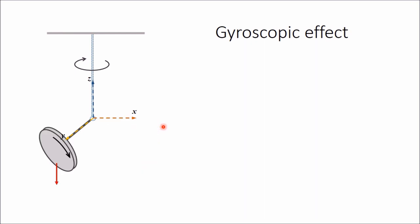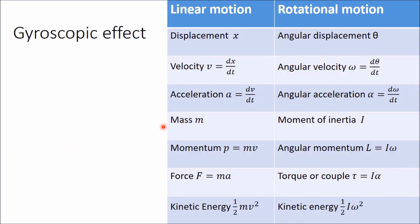To understand this phenomenon we need to know analogies between linear motion and rotational motion. In linear motion, linear displacement is represented by x; in rotational motion angular displacement is represented by θ. Linear velocity v is dx/dt, so angular velocity ω is dθ/dt. Similarly, acceleration is differentiated from velocity; angular acceleration is differentiated from ω. Mass moment of inertia I is analogous to mass m. In linear momentum we multiply mass with velocity, so angular momentum is I times ω.